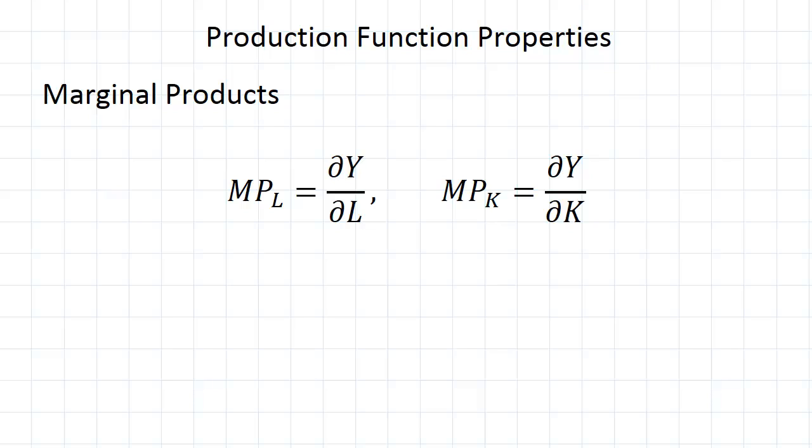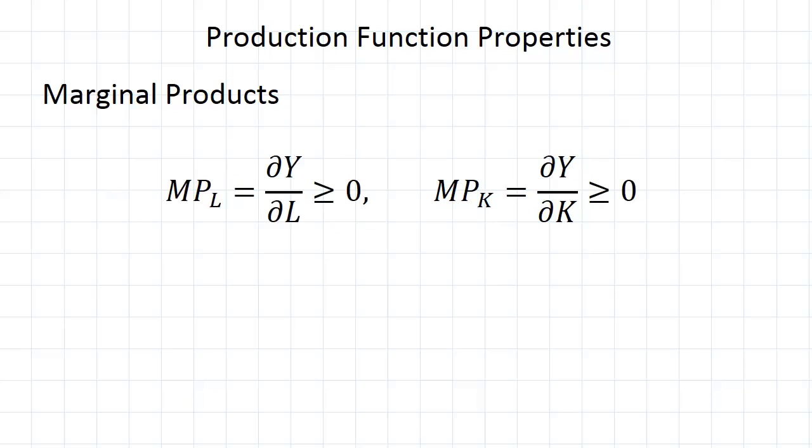Now an assumption we make for both of these is that they should always be positive, or at least non-negative. After all, if you add an input you expect that you will get more output. Certainly it should never be the case that if you add more of an input you get less output. So these should be greater than or equal to zero for all values of L and K.